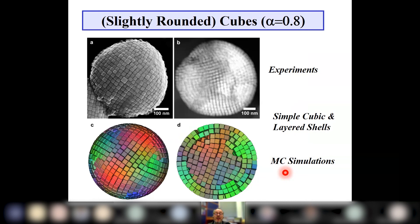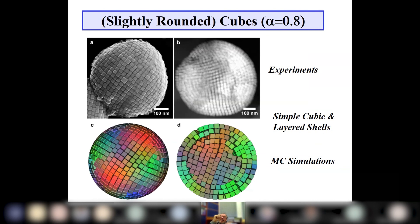We got very similar structures in simulations and real-space analysis of tomograms, having to take even the tiny extra roundedness of the ligands into account to get perfect agreement. Simple cubic structures are not so interesting because directed attachment — removing ligands by heating — would just give one big clump of crystal.